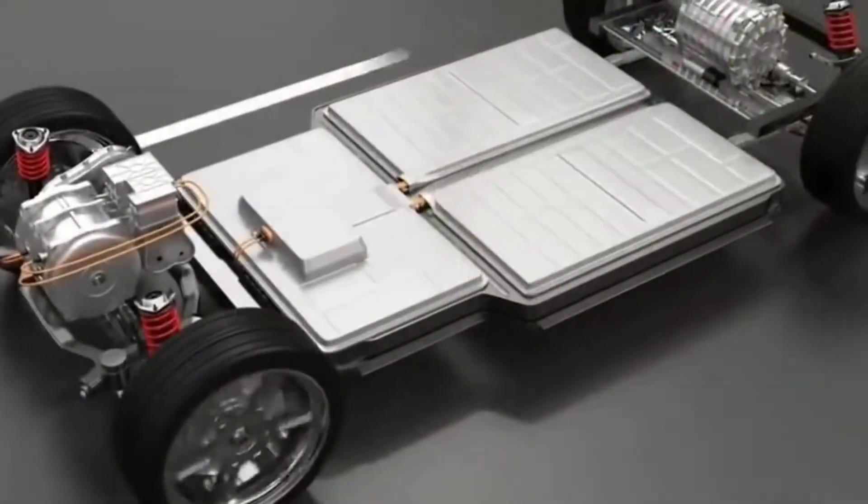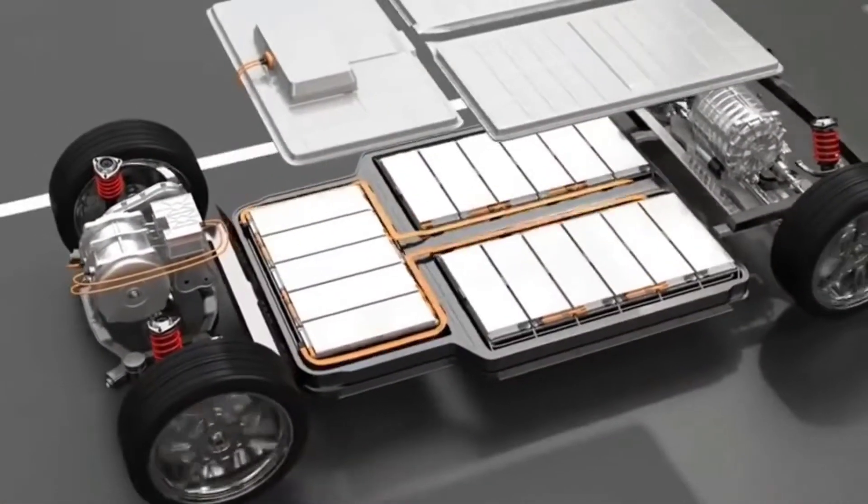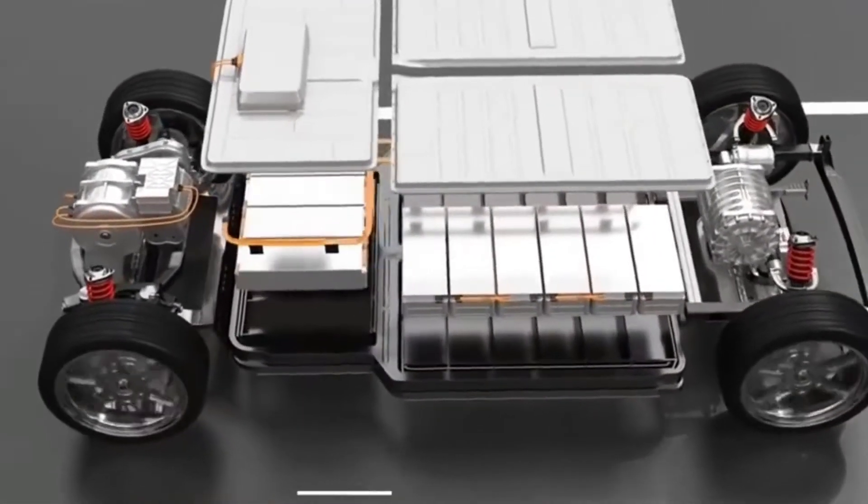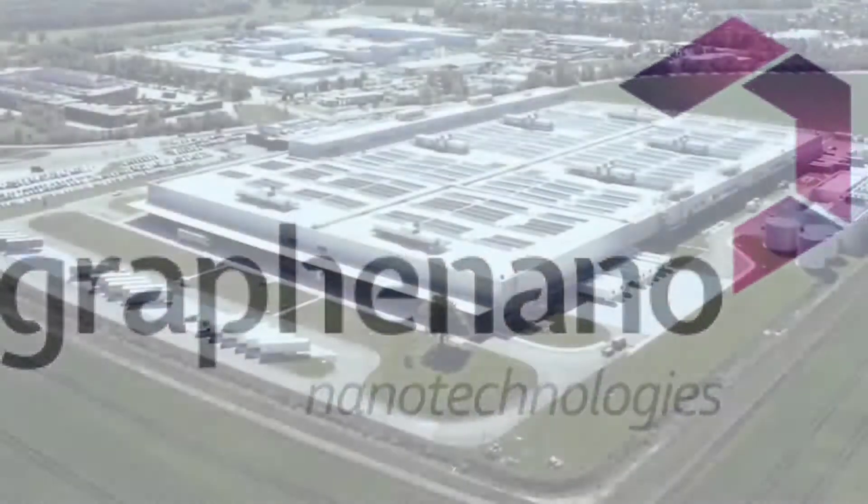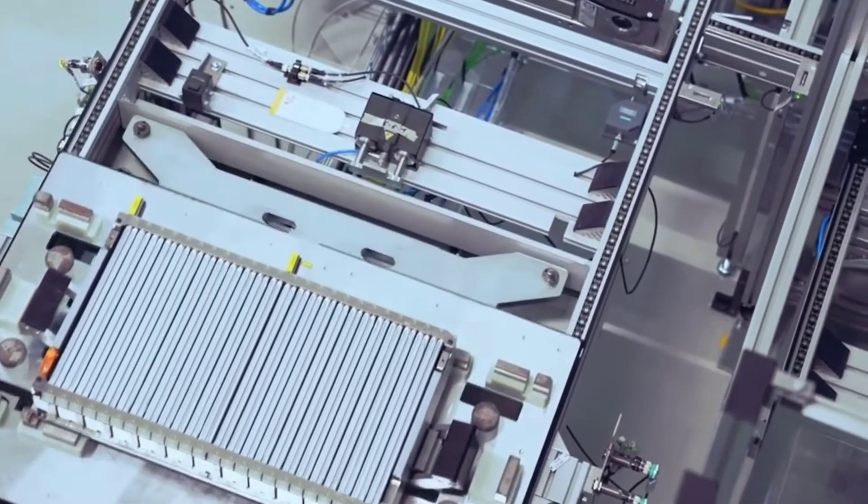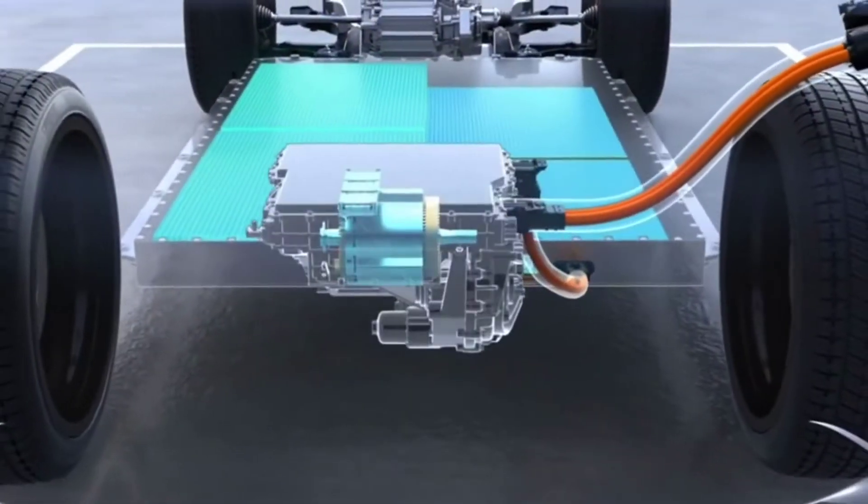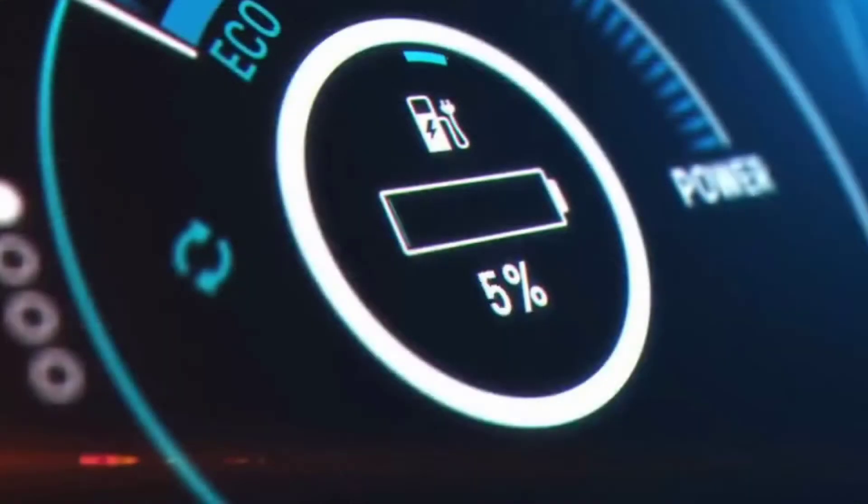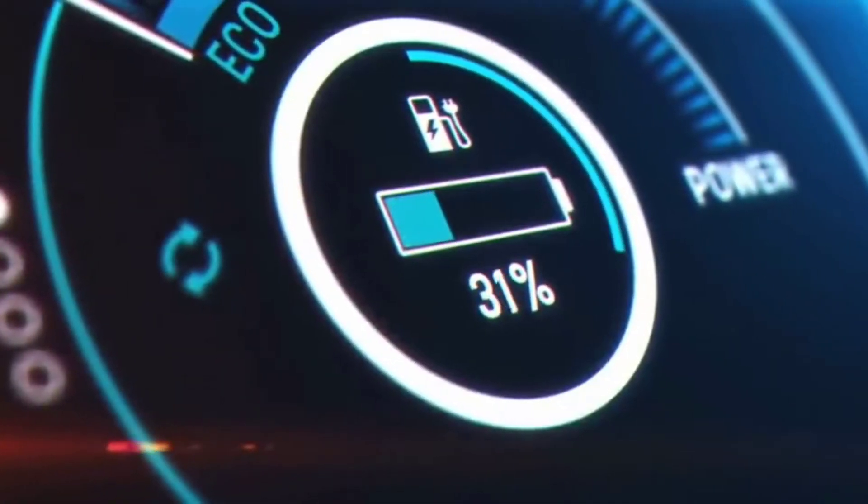New graphene battery advancements have resulted in the development of a battery that outperforms any lithium-ion battery now in use. Last year Graphene Nano, a Spanish battery startup, announced a graphene polymer battery that might allow electric vehicles to travel up to 800 kilometers on a single charge. The battery could theoretically be charged in a matter of minutes because of its graphene architecture. The batteries can charge and discharge nearly 33 times faster than a standard lithium-ion battery.